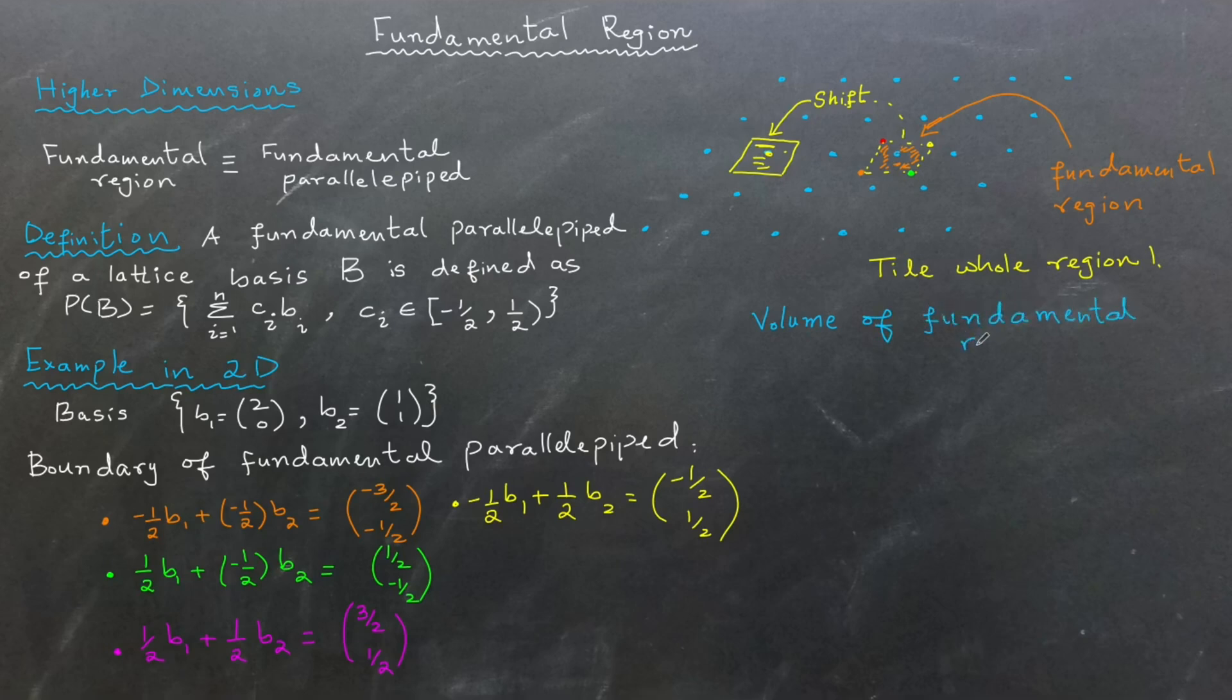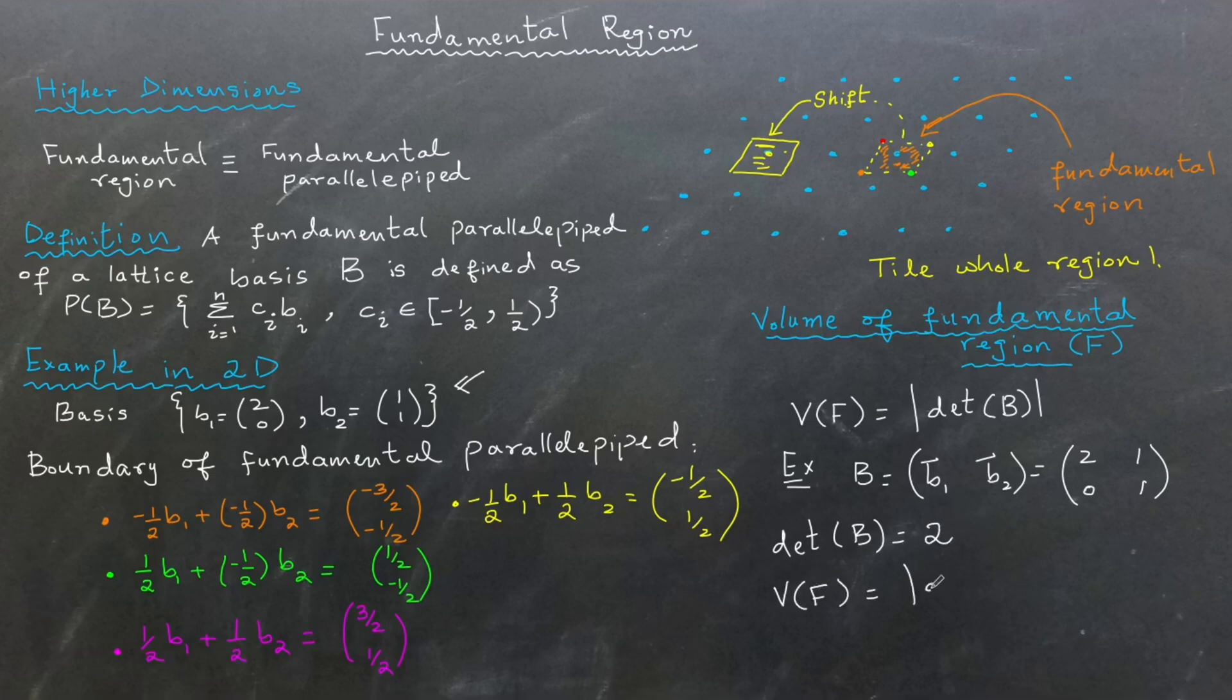Another important property of a fundamental region is its volume. The volume of a fundamental region is equal to the absolute value of the determinant of the matrix formed by the basis vectors. In our example, the matrix formed by the vectors has determinant 2, which means that the volume of the fundamental region is also 2.